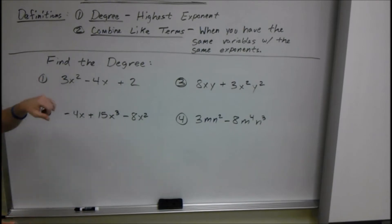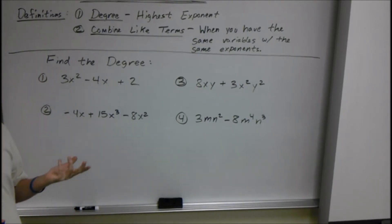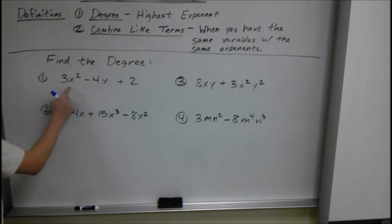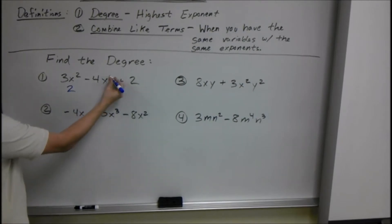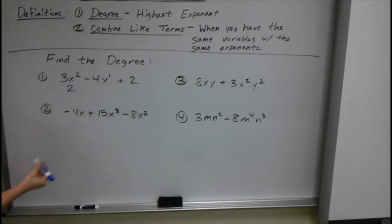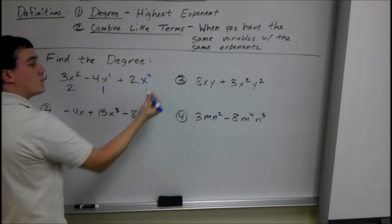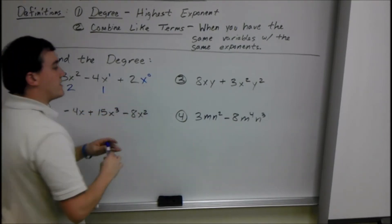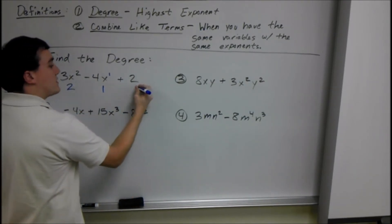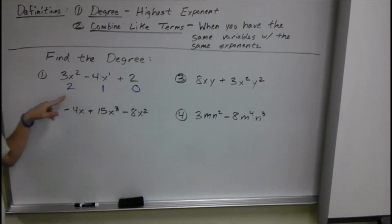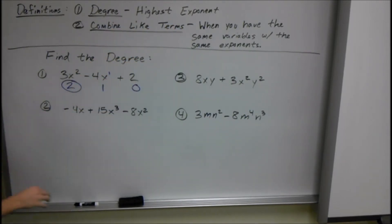Just start with the basics: find the degree of each polynomial. We're just looking at the highest exponent. Let's list the exponent of all of our terms. Here we have an exponent of 2, so that's the degree of just that term. The exponent of this term is 1, since there was nothing written there. And here, since there's no variable, the exponent would be 0, because anything with an exponent of 0 is 1. So whenever it's just a constant, your degree is 0. The degree of the entire polynomial is the highest exponent, which is 2.